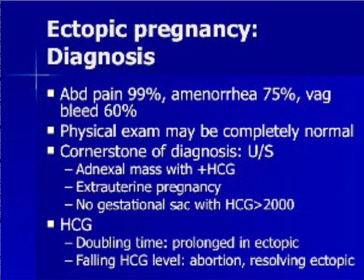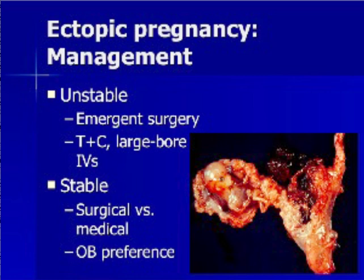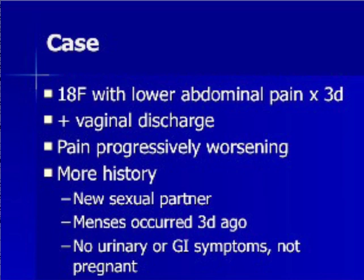Physical examination in hemodynamically stable patients with ectopic pregnancy may be completely normal. The only way to accurately diagnose most cases of ectopic pregnancy is with pelvic ultrasound. The presence of an adnexal mass or the absence of an intrauterine pregnancy with an HCG level greater than 2,000 should prompt concern for ectopic pregnancy. The HCG doubling time is usually significantly longer than 48 hours in ectopic pregnancy. Unstable patients generally require emergent operative management; the goal in the ED is to optimize pre-op conditions with type and cross-matched blood and aggressive fluid resuscitation through large-bore IVs. Stable patients may be managed medically with methotrexate or surgically based on obstetric consultation.